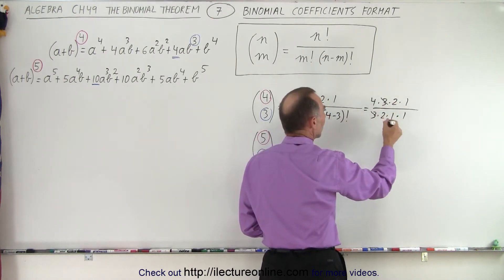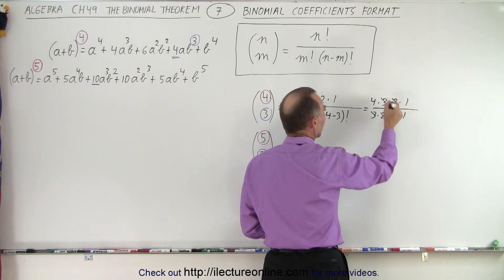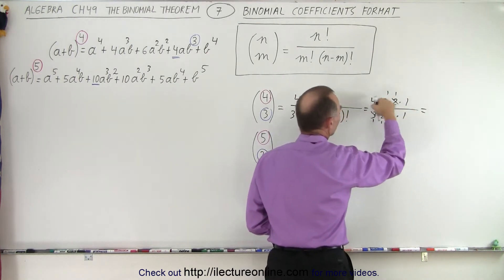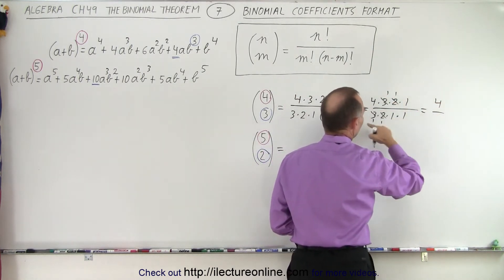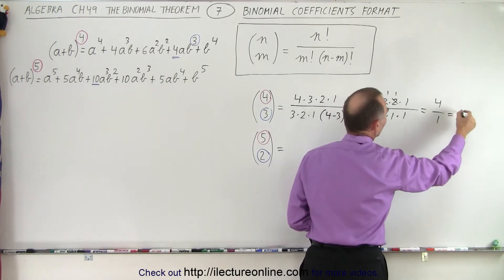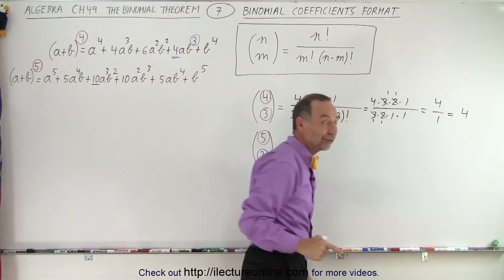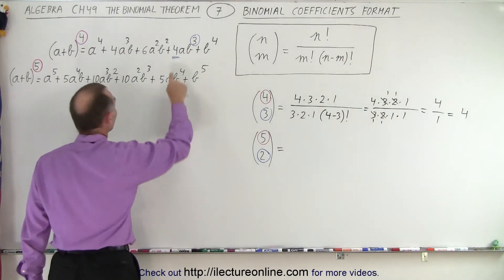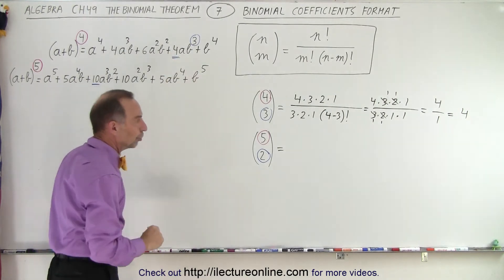Now you can easily simplify this. The 3 in the numerator cancels with the 3 in the denominator. The 2s cancel as well. This leaves 4 in the numerator divided by 1, which equals 4. Notice that's the number we were expecting, the numerical coefficient of this particular term.